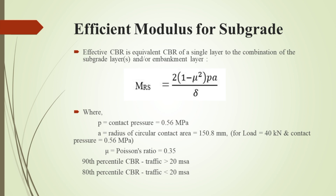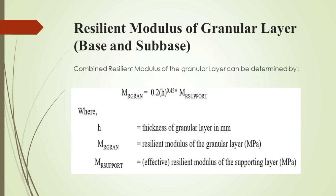A demonstration of IITPAVE will be made in the next video. Next is the resilient modulus of the granular layers. Granular base and subbase are generally considered as a single layer for analysis, so the combined resilient modulus can be determined using the provided equation, where H is the total thickness of the granular base and subbase, and MR support is the effective resilient modulus of the subgrade.